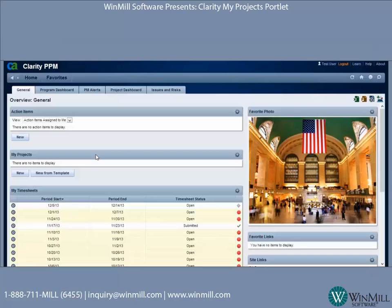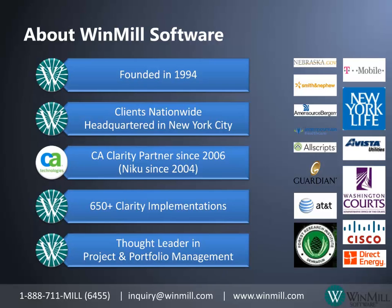About Windmill: Windmill Software provides the services you need to effectively utilize CA Clarity to improve project portfolio, financial, and resource management for your organization. They are a preferred services partner and advanced channel partner of CA Technologies, with over 650 Clarity professional services implementations since 2004. For more information, contact the Windmill account manager at inquiry@windmill.com or 1-888-711-6455.